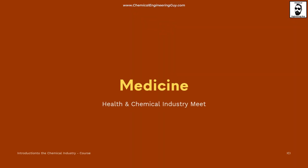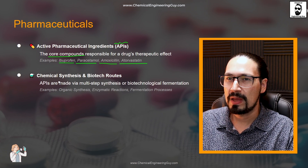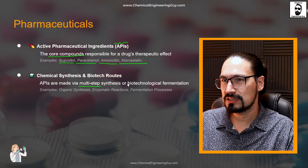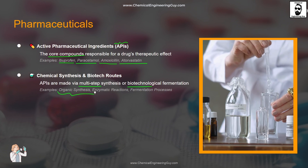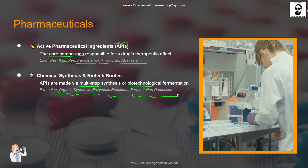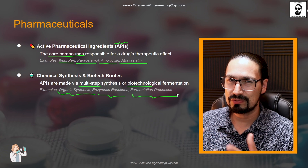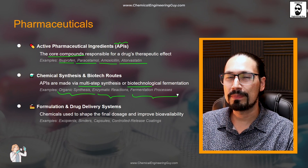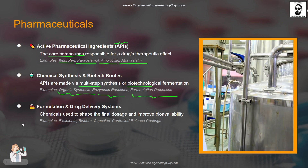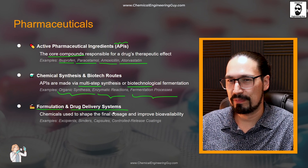All these come from chemical synthesis and biotech routes. APIs — not to be confused with the API from computing — are made via multiple steps: synthesis, biotech, fermentation, batch reactions, and such. Typical processes are organic synthesis, enzymatic reactions, and fermentation processes. A lot of these are actually more into biotech or pharmaceutical sciences, but a chemical engineer can still have a broad understanding of pharmaceuticals. Understanding formulation and drug delivery systems is also an interesting aspect of the pharmaceutical industry.